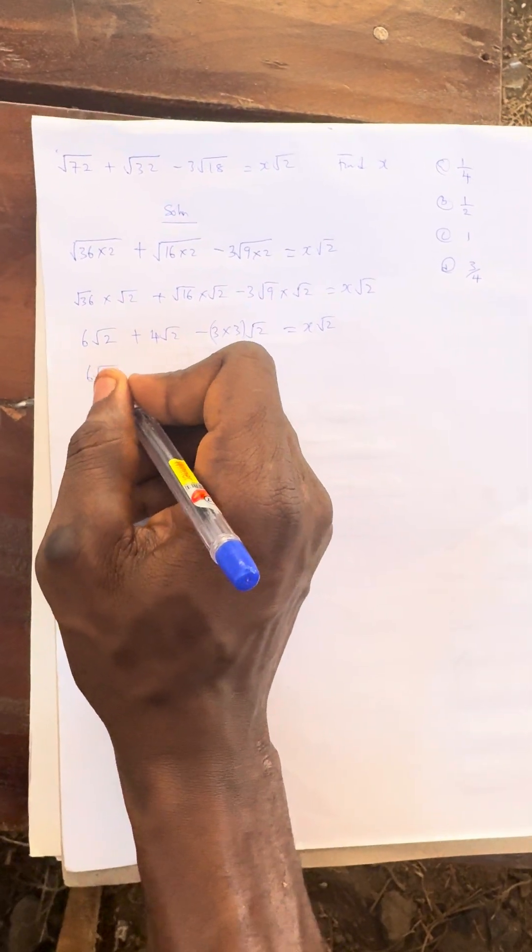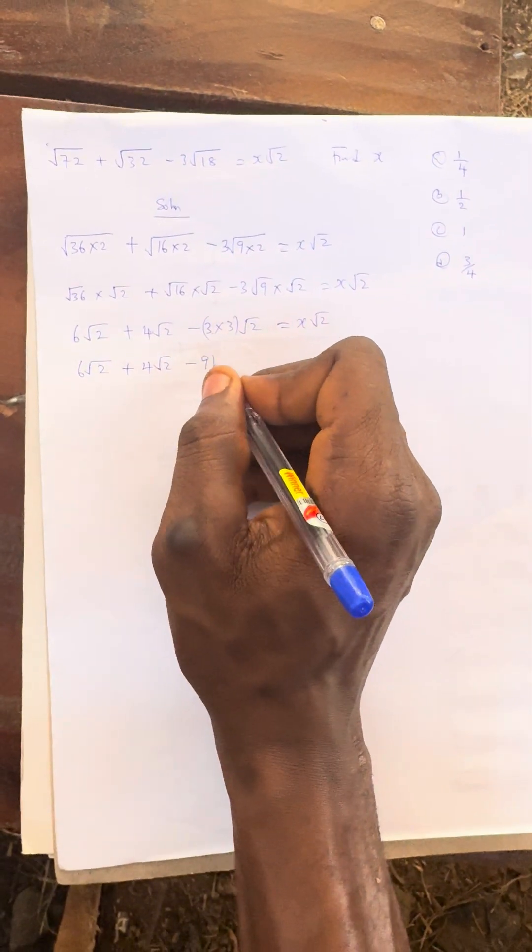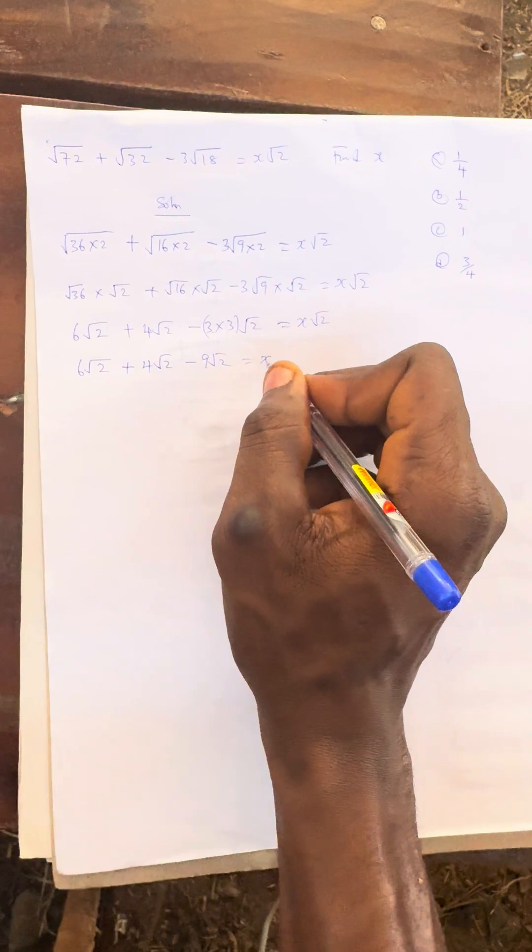This is 6√2 + 4√2, then 3 × 3 is 9, so that's -9√2, which equals x√2.